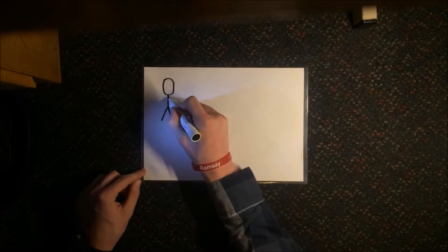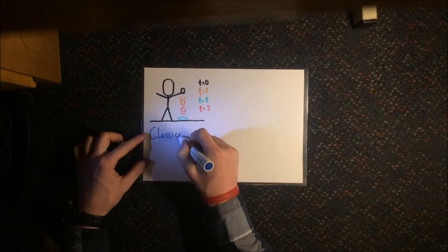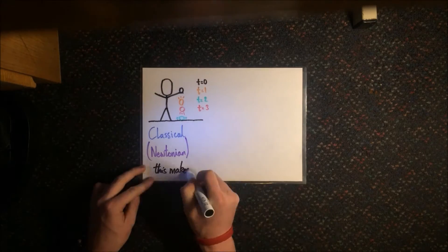Classical physics is the world around us, so it seems obvious that if I was to let go of a ball, it would fall, hit the floor, squash a bit, and bounce back upwards.